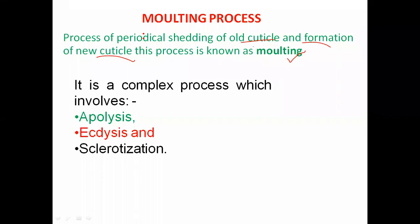Which are the major steps or processes involved during the molting process? There are three steps that complete the molting in insects. Firstly, apolysis; secondly, ecdysis; and thirdly, sclerotization. These three form a complete complex molting process.